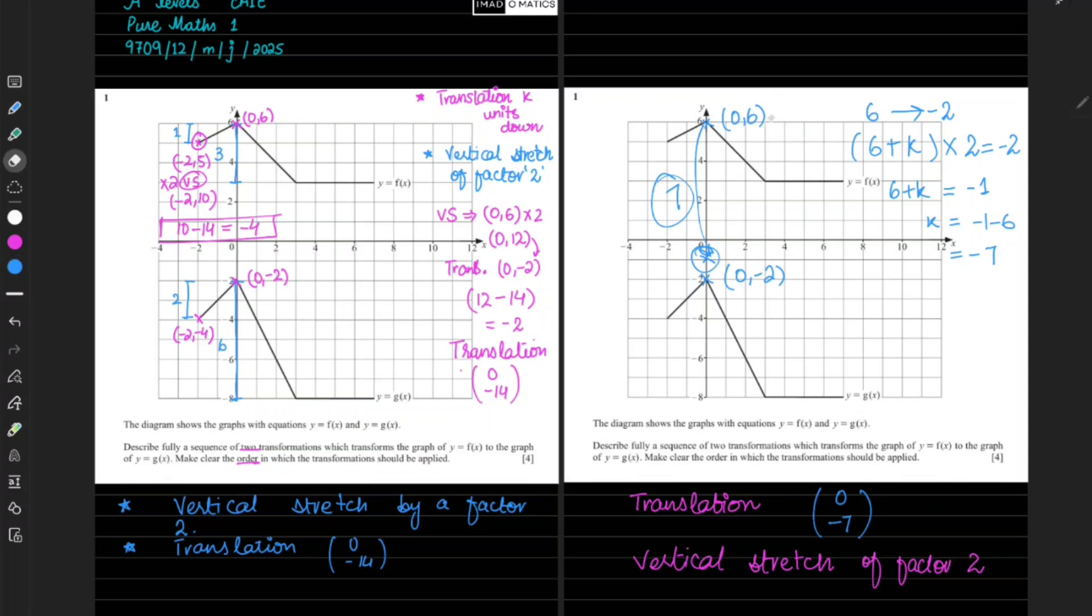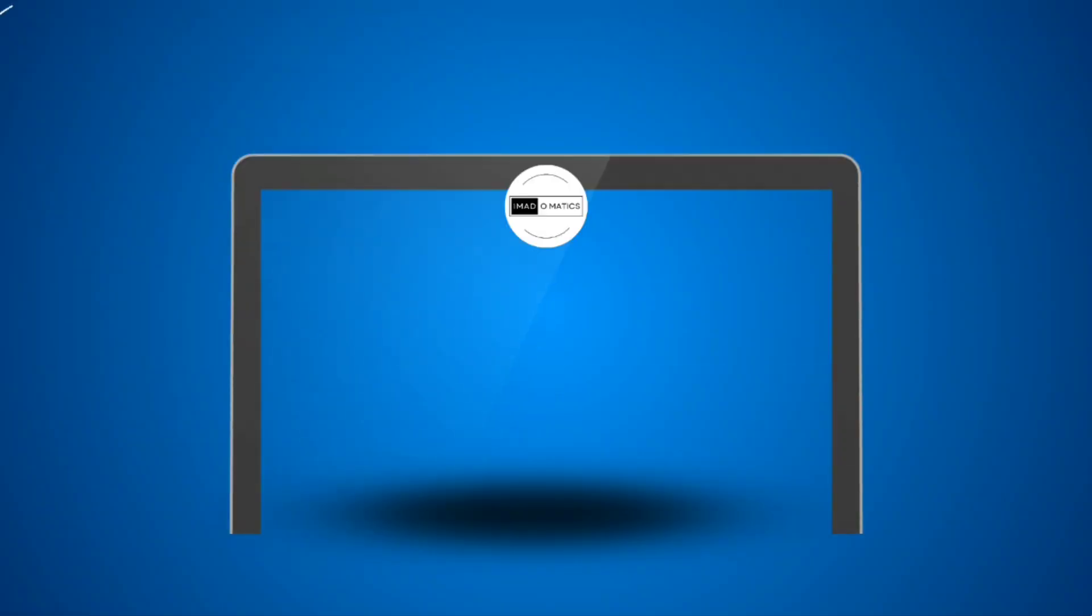Actually, transformations - by looking at the transformation it seems like it's very easy to understand because you can clearly see it is going eight units downwards. But to understand it in a more better way, it is better always to look for the vertices, how the vertices are changing from one place to another. I hope you understand this. I hope you get the concept. Thank you.